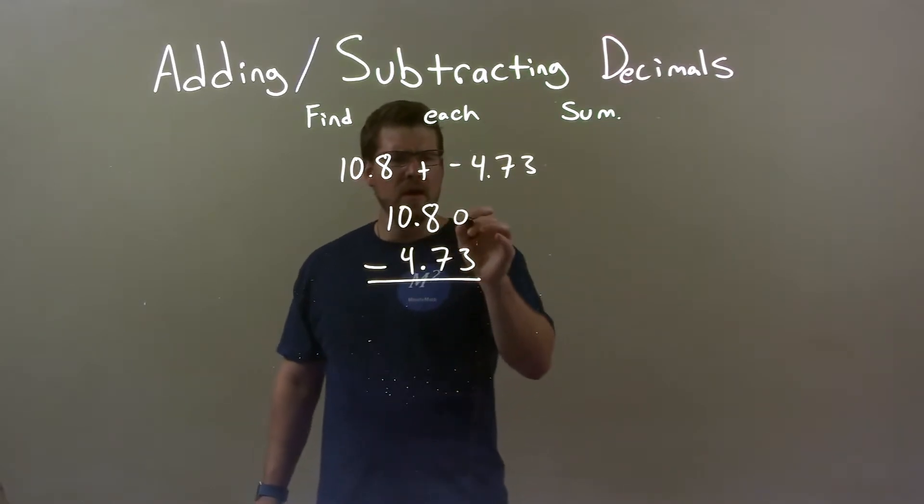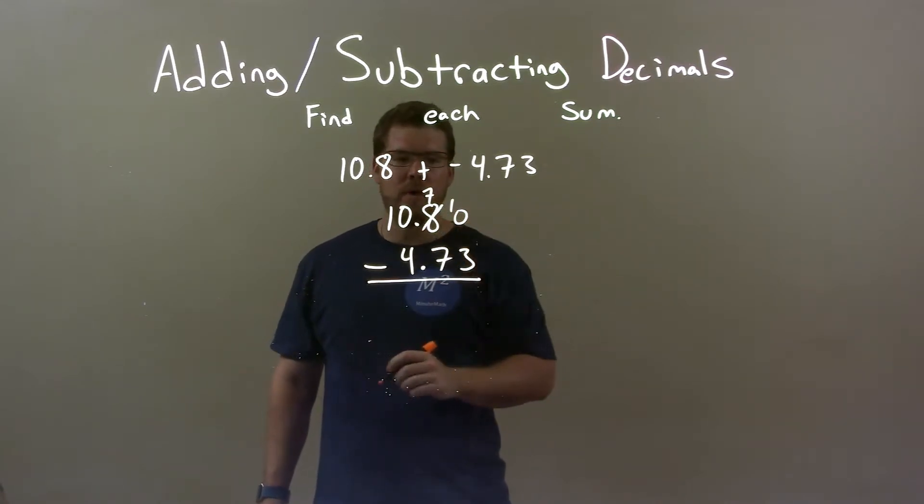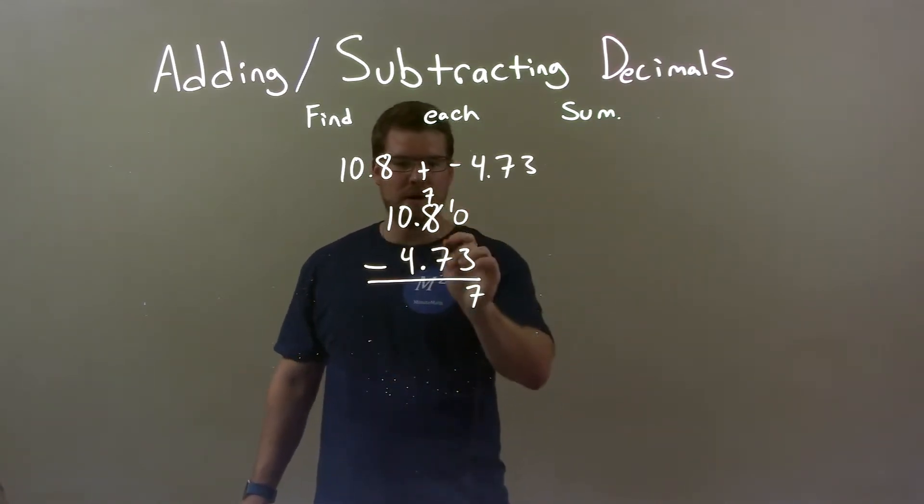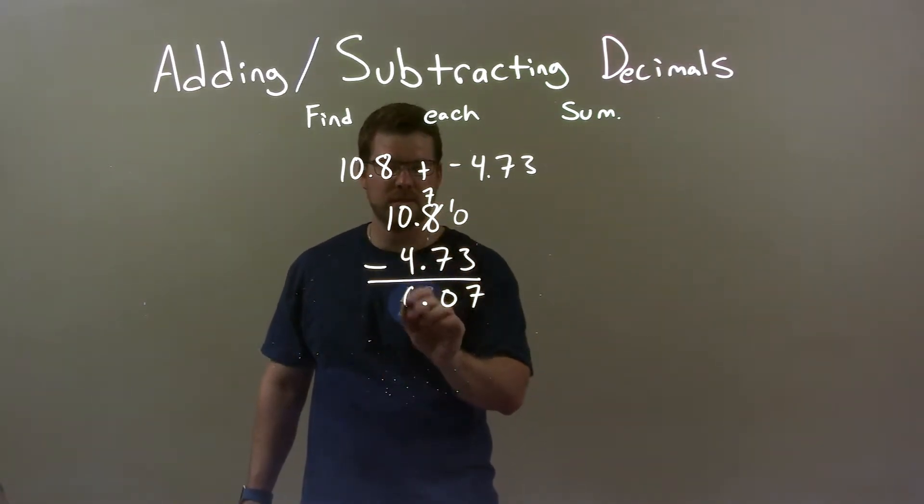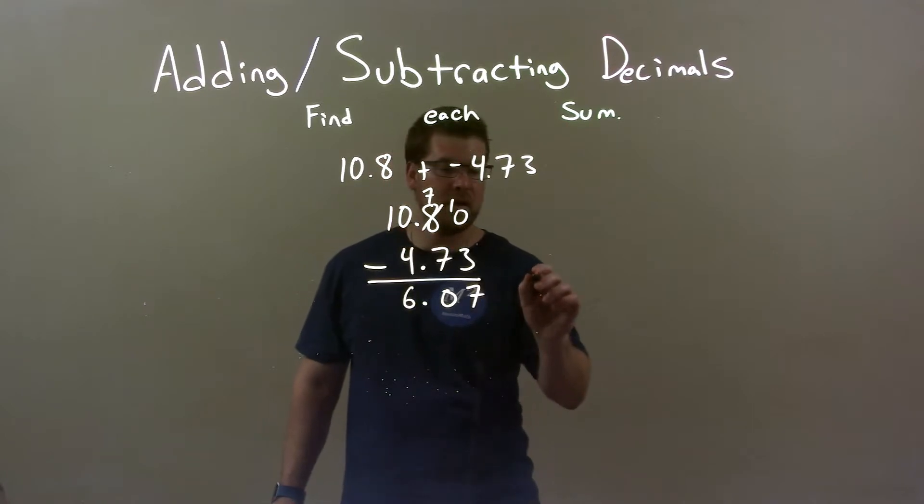Well, 0 minus 3 doesn't work, right? So we take the 8 and we make it a 7, and bring and carry that 1. Now we have 10 minus 3, which is 7. 7 minus 7, which is 0. Decimal place comes down, and 10 minus 4 is 6. And so, here we have our final answer is 6.07.